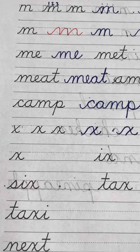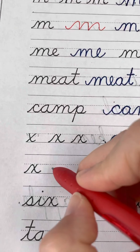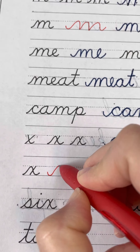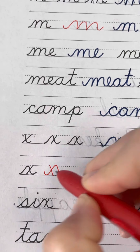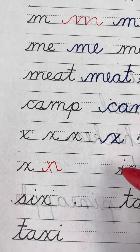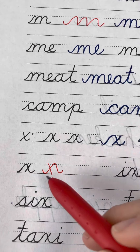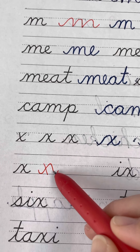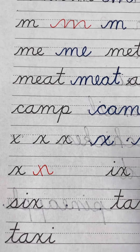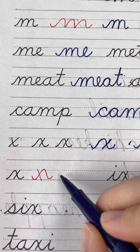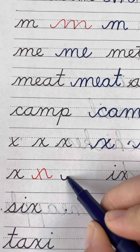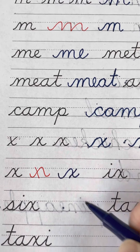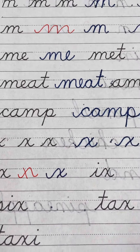Let's do some bad examples of X's. So what if I did a bad example and I crossed like that? Do you notice what I did wrong? I crossed the first line instead of the second one. So make sure when you swoop up, swoop down, you cross the second line for your X.